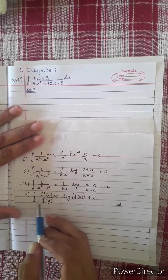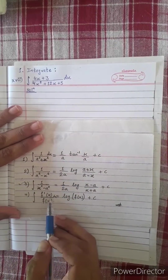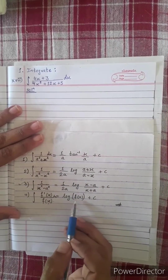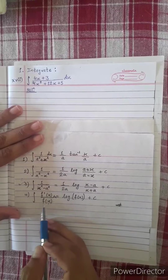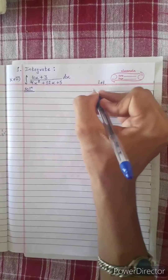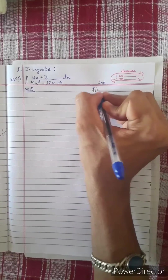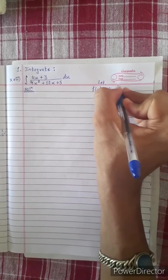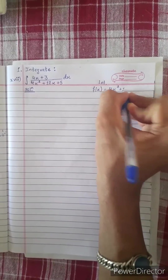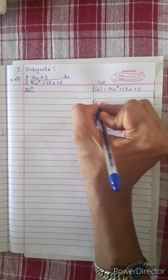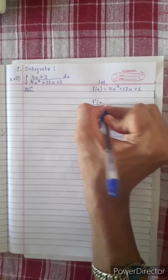Formula number 4: f'(x) divided by f(x) equals log f(x) plus c. Now try the numbers. Let f(x) equals 4x squared plus 12x plus 5. This is the derivative f'(x).